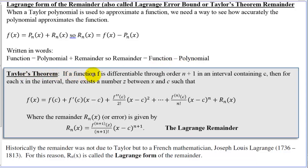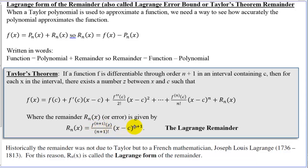Taylor's theorem: If a function f is differentiable through order n+1 in an interval containing c, then for each x in the interval there exists a number z between x and c such that f(x) equals the polynomial approximation plus the remainder. The remainder R(x) is given by: R(x) equals the (n+1)th derivative evaluated at z, over (n+1) factorial, times (x − c)^(n+1). This is the first omitted term — the Lagrange remainder.